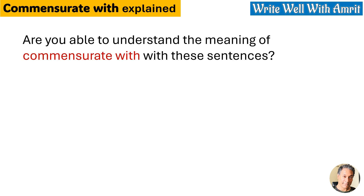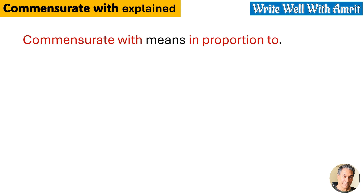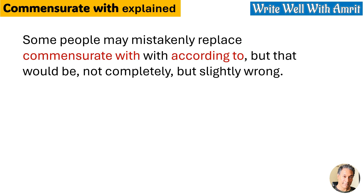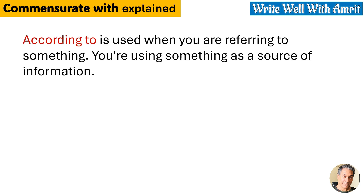The course curriculum offers a challenge commensurate with the amount of learning needed. Are you able to understand the meaning of 'commensurate with' from these sentences? Commensurate with means 'in proportion to.' Some people may mistakenly replace 'commensurate with' with 'according to,' but that would be not completely, but slightly, wrong.